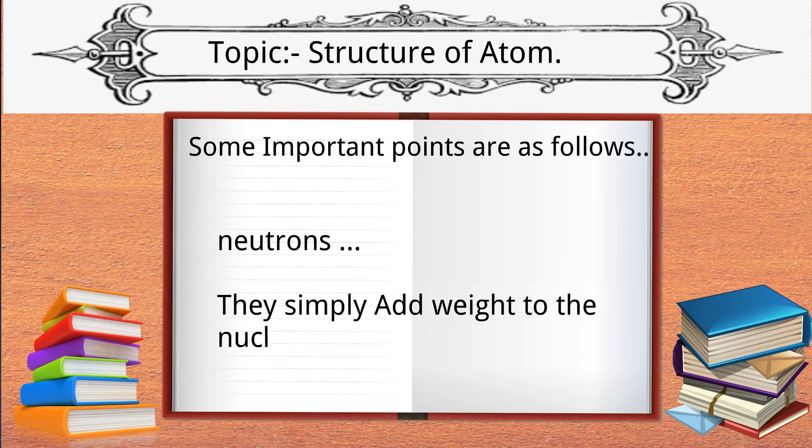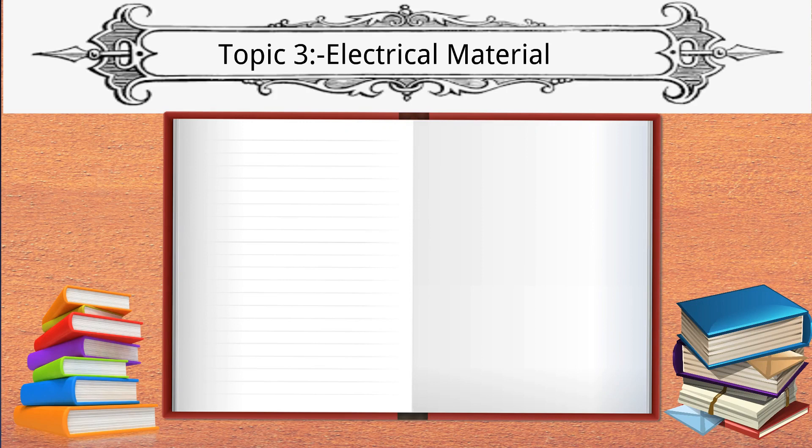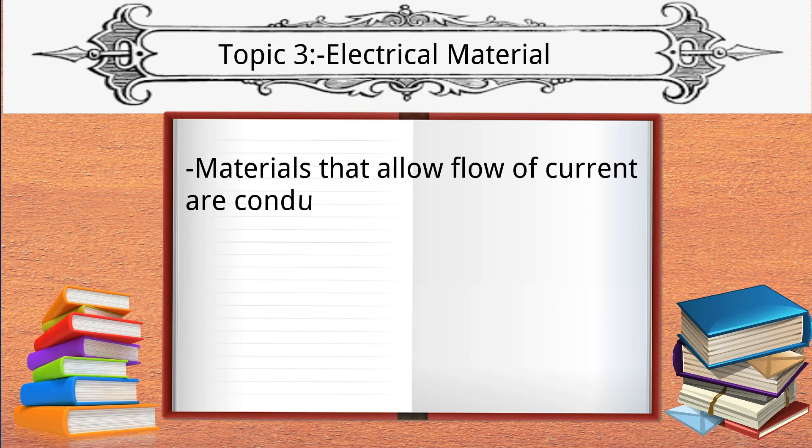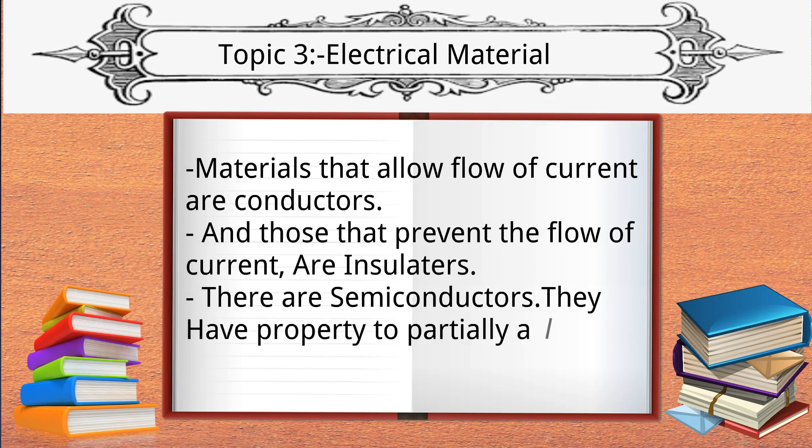Now let's see topic number three: Electrical Materials. It is one of the basic things that materials that allow flow of current are conductors, and those that prevent the flow of current are insulators. But there also exist semiconductors. They have the property to partially allow current to flow. We will talk about them in detail later.